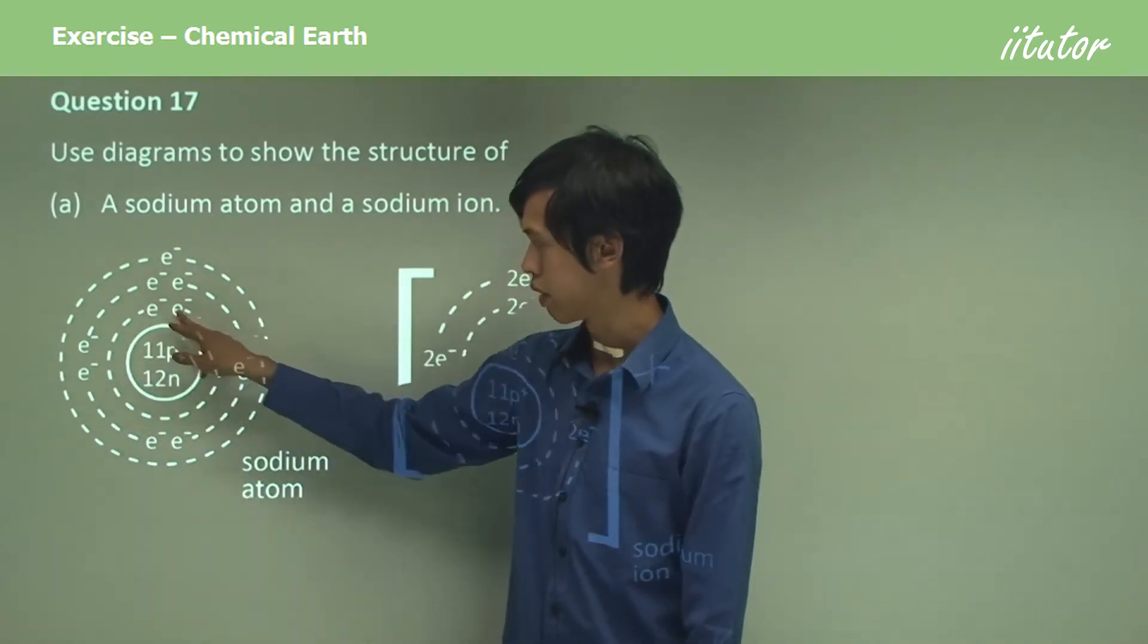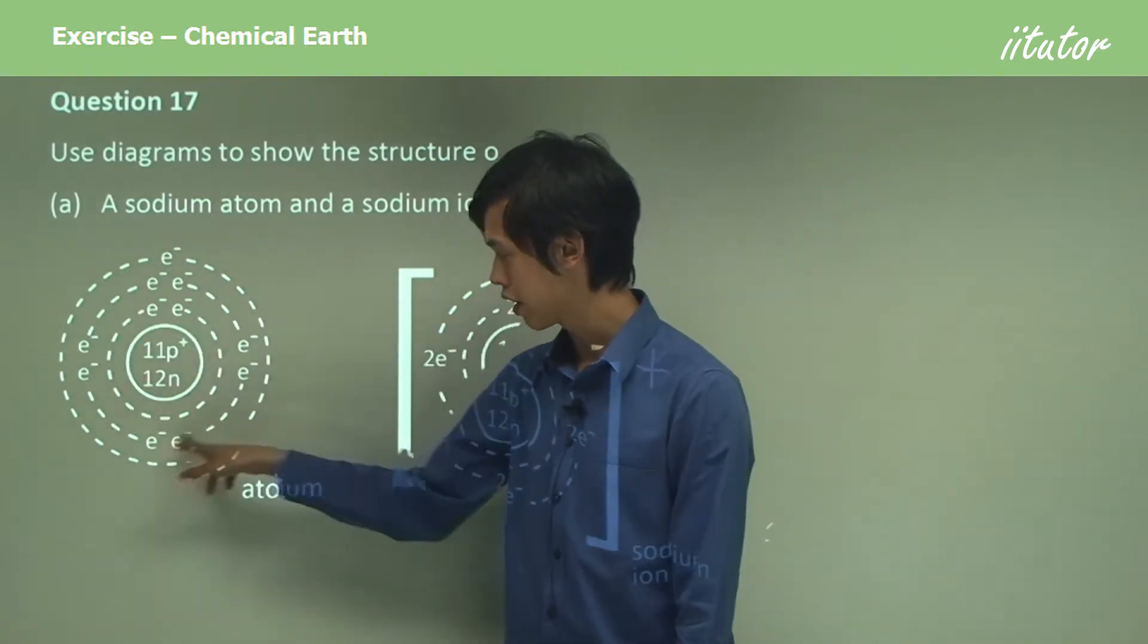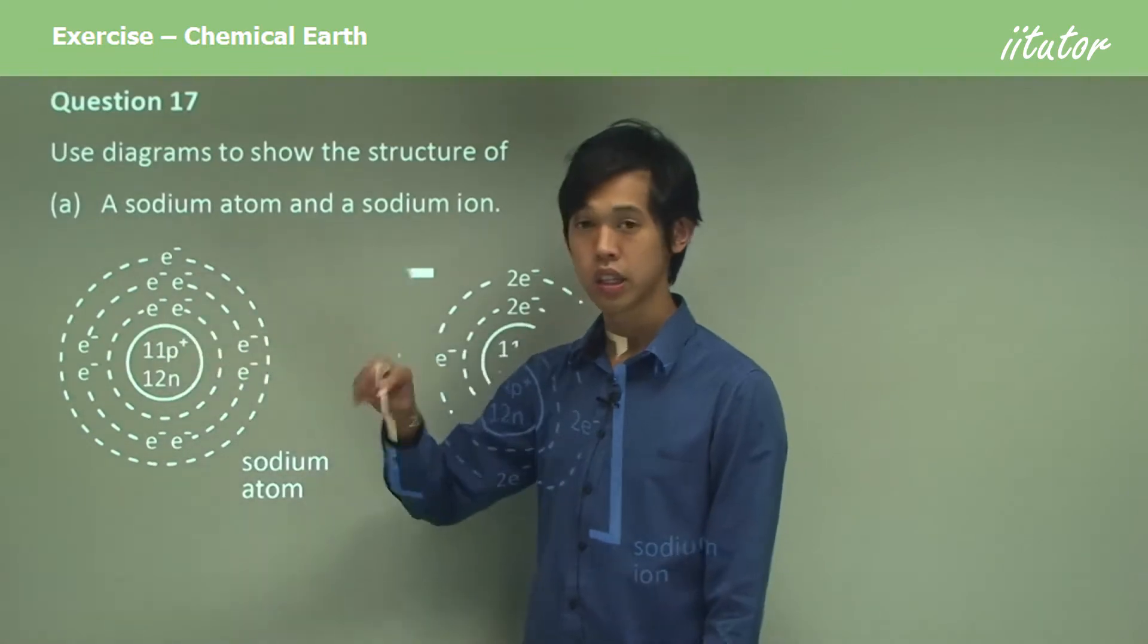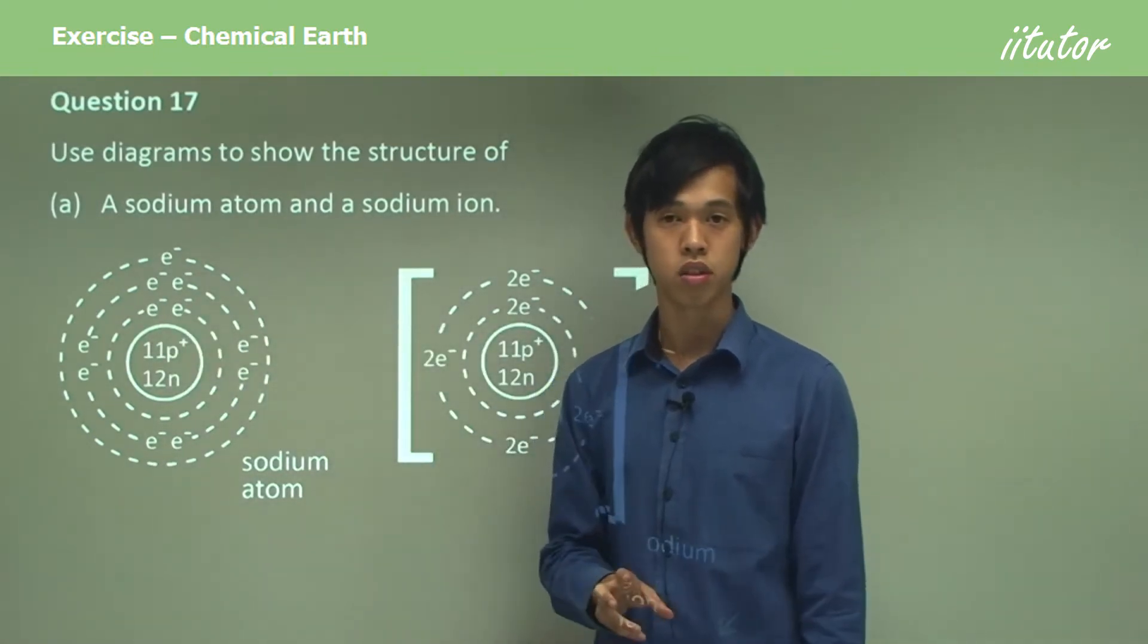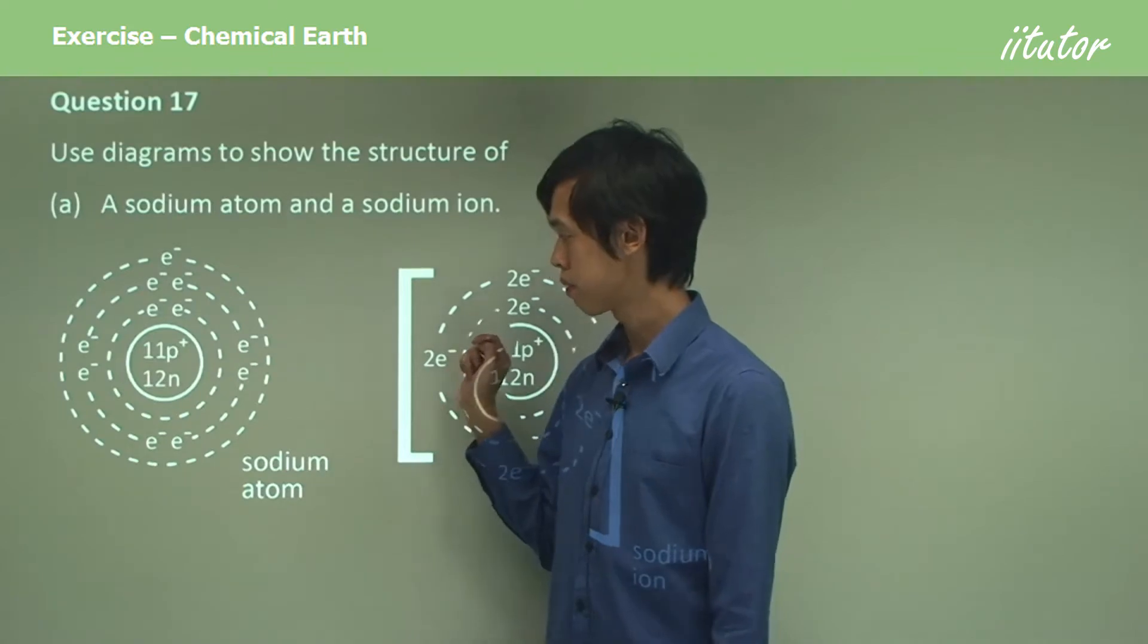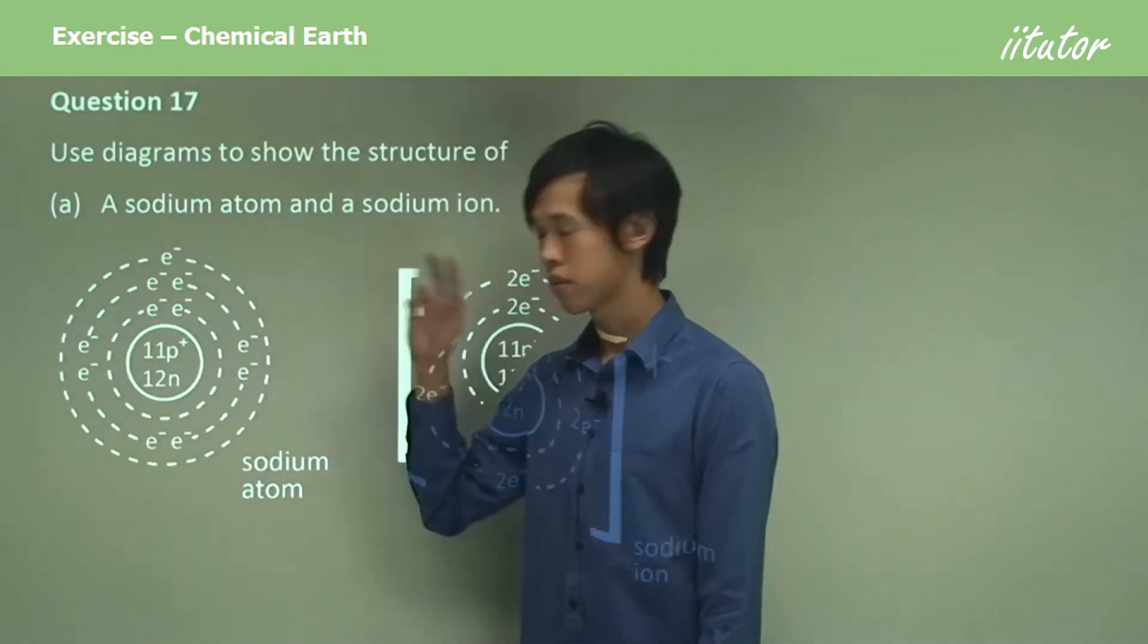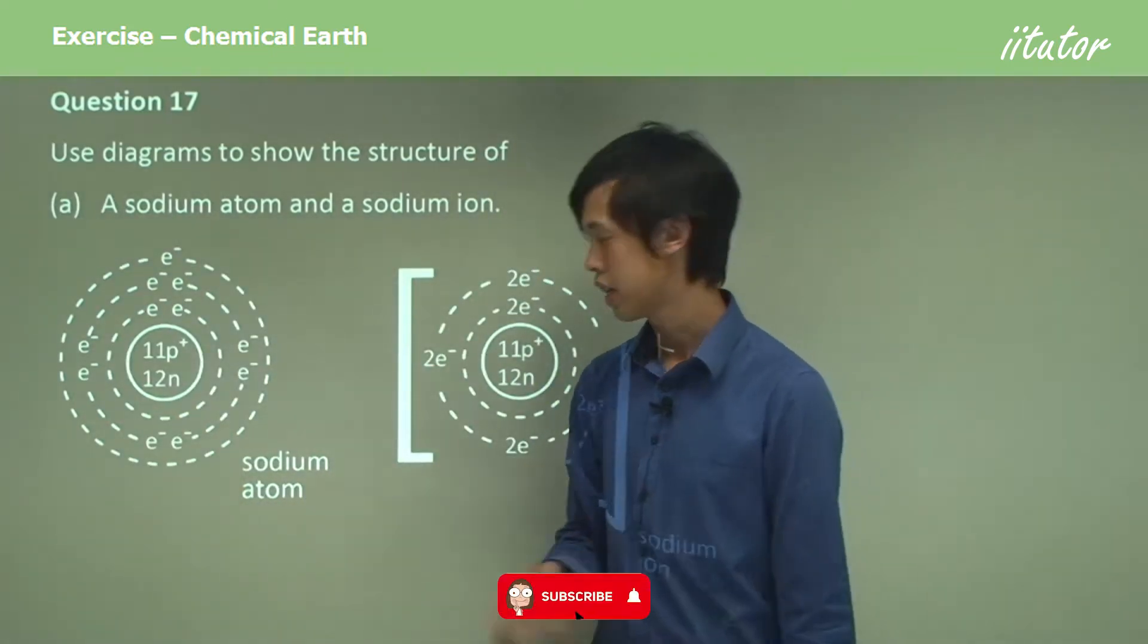In the innermost shell you can see two electrons. Then in the outer shell, if you count them up, the second shell, there's eight. If you want to pause the video now, you can quickly count them for yourself. And in the outermost shell, there's one electron. So that's the sodium atom.